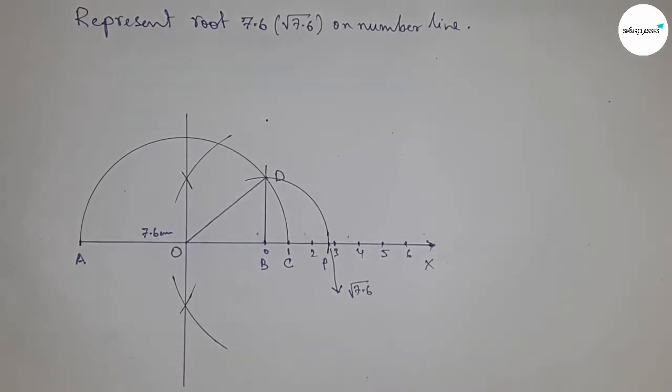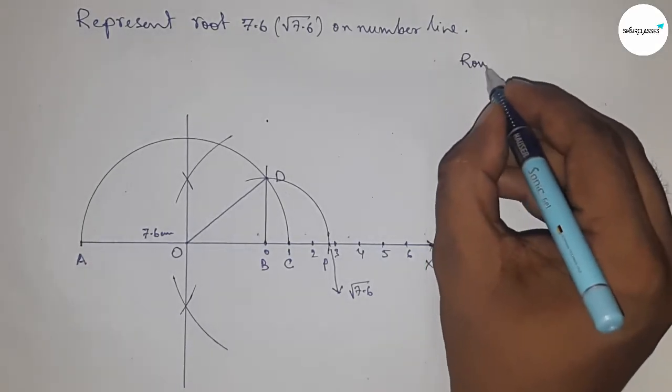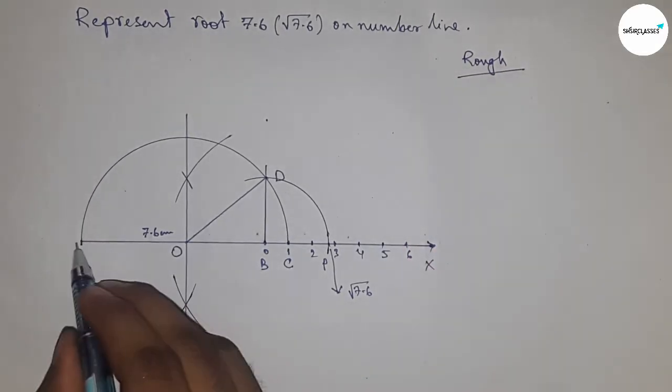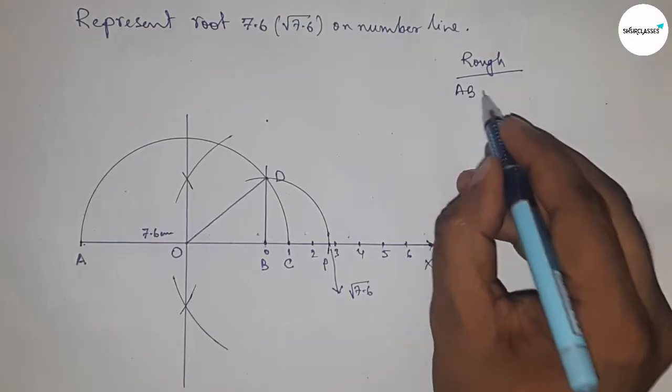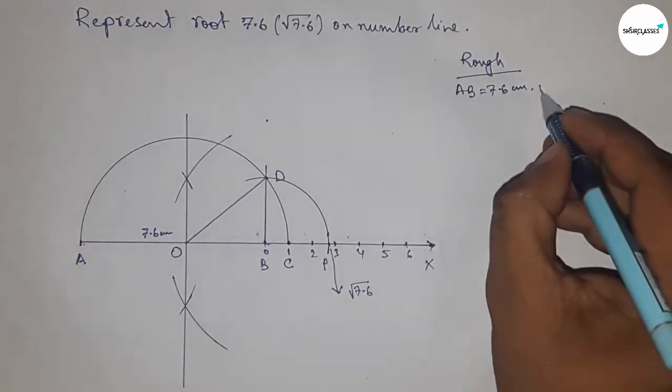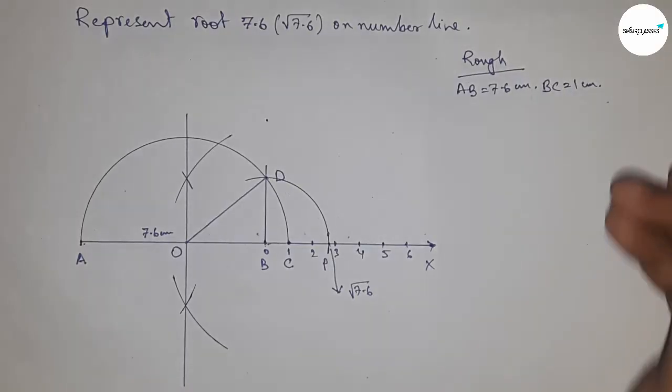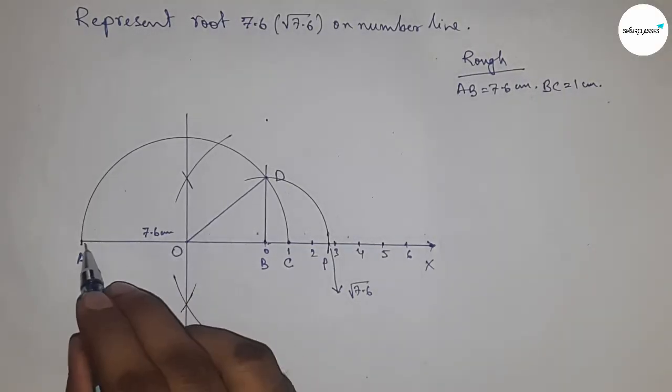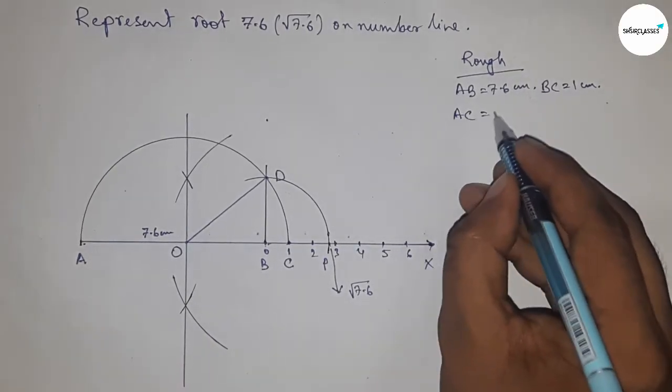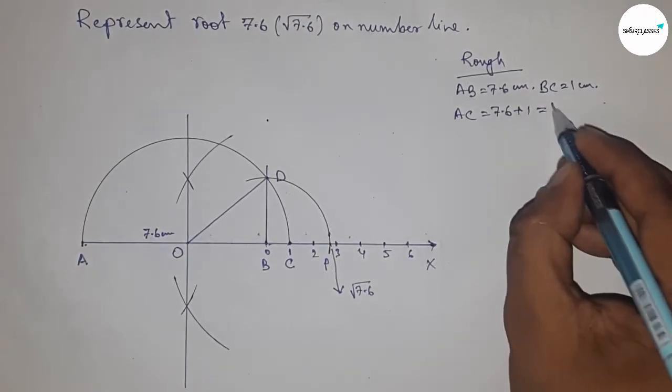Now let's discuss the calculation. Given AB equals 7.6 centimeter and BC equals 1 centimeter, we can write AC equals 7.6 plus 1, so 8.6 centimeter.